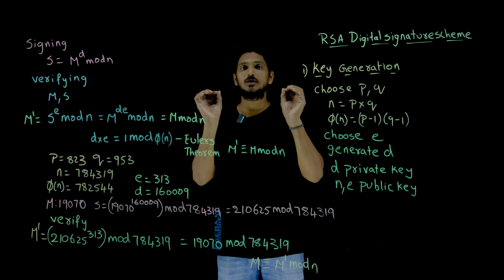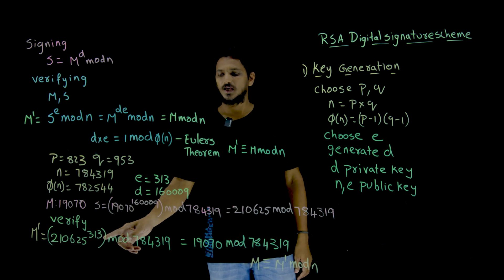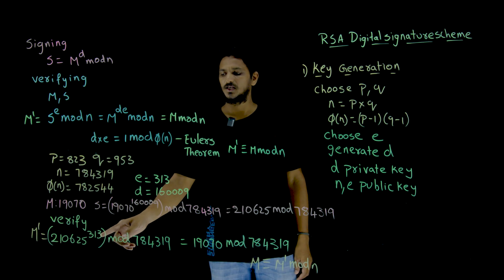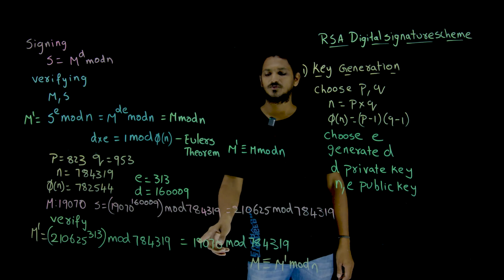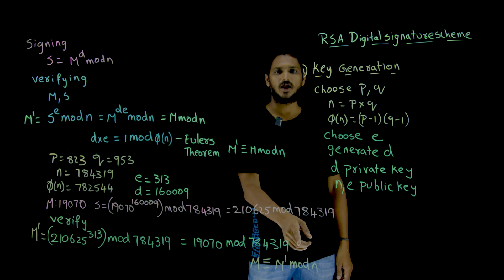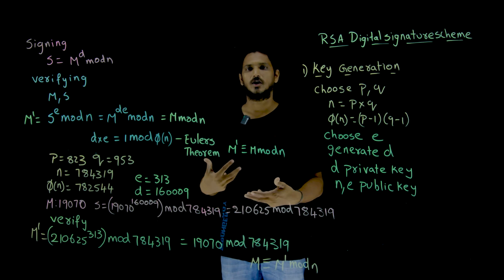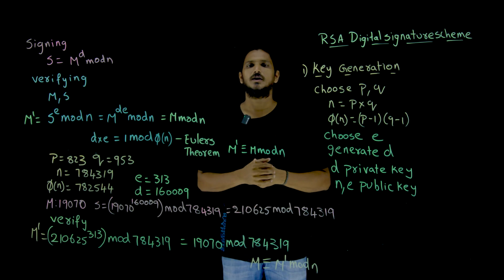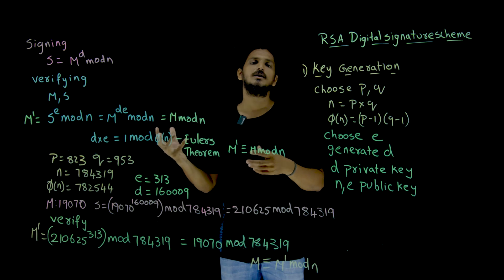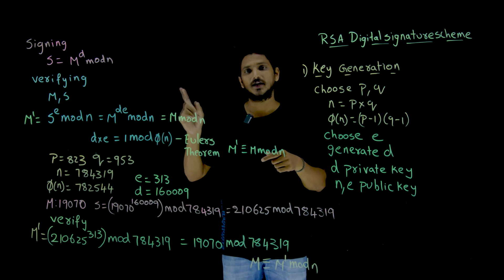The message and signature are both sent to the verifier. The verifier generates M dash: M dash is equal to signature power E, which is 210625 power 313 mod 784319. From this, this is the same as 19070 mod 784319. So M is congruent to M dash mod N — he got both the same, 19070, which is M. M is congruent to M dash mod N, so the verifier will say that both are the same. The message signature is accepted — he is going to accept the signature as coming from a valid, authenticated sender.